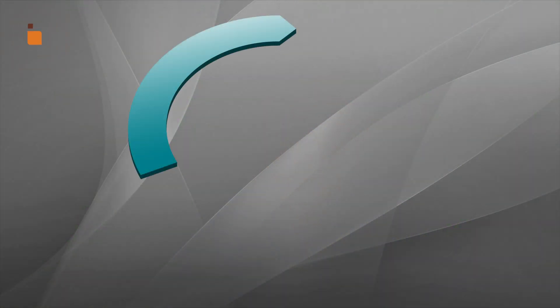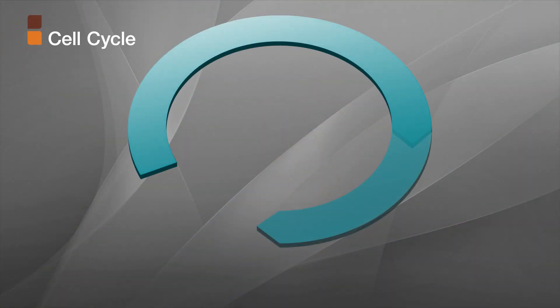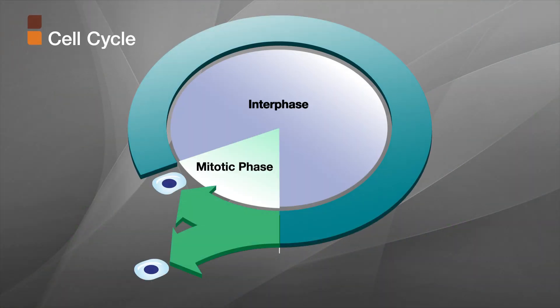Hi, I'm Geri Sehe, autoimmune technical trainer for BioRad Laboratories. As a cell goes through different phases during its life, the term cell cycle is used to describe the phases. Mitosis is the time in the cycle when the cell divides. Everything else is interphase.